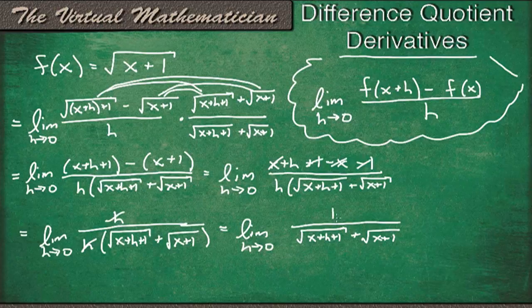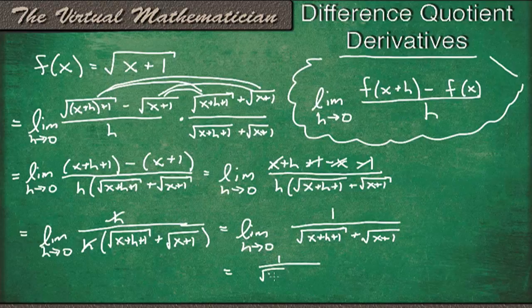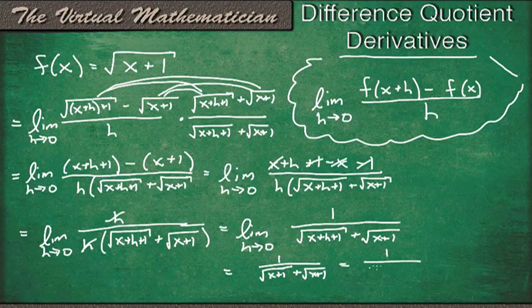When h goes to 0, this just becomes the square root of x plus 1. So this just becomes 1 over root x plus 1 plus root x plus 1, which equals 1 over 2 square root x plus 1.